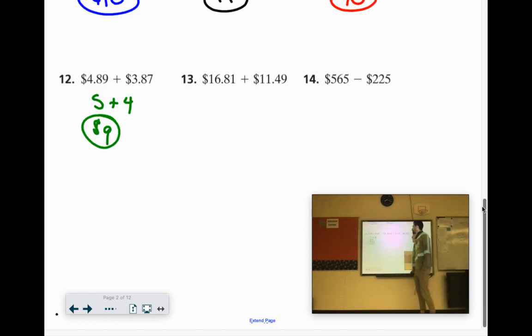16.81 and 11.49. Let's call it $17 and $11. Maybe you'd call 11.49 $12. It's all good. But I bumped up 16.81, so I bumped down this 11.49. 17 plus 11 would be 28.